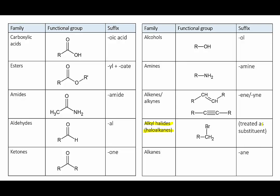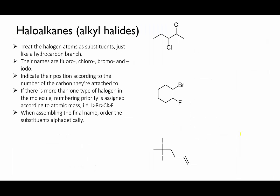Let's look at some examples. Haloalkanes are so-called because they have a halogen atom attached to them. The halogens, remember, are the group 7 elements: fluorine, chlorine, bromine and iodine. When they're attached as a substituent to a hydrocarbon, they are named as fluoro, chloro, bromo and iodo.